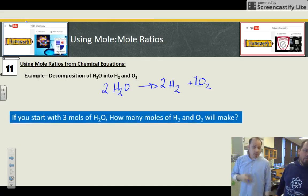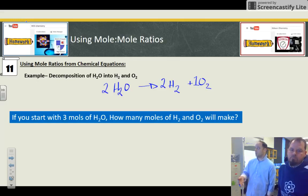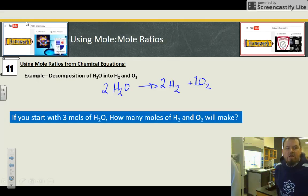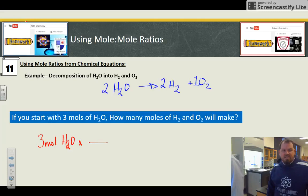But let's get the problem. Here's the problem. If you start with three moles of H2O, how many moles of H2 and O2 will be made? All right. So let's start. We've got three moles of H2O to start with. I'm going to need moles of H2 in the denominator of my conversion factor to get rid of it. So that's the two moles of H2 from the balanced chemical equation. And let's go into H2 first. So it's two to two.